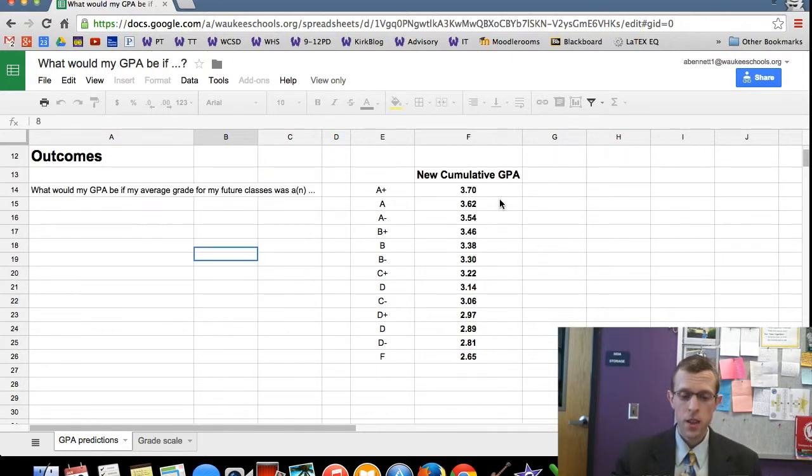And then down here, these are all the outcomes. So if they averaged A-plus, they got A-pluses on all their classes, they'd end up with a 3.7 GPA for the example that I've got here. If they averaged a C-plus for all their classes, they'd end up with a 3.22 after those additional classes.